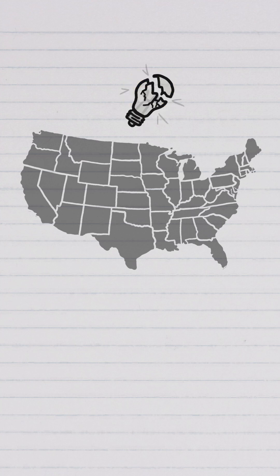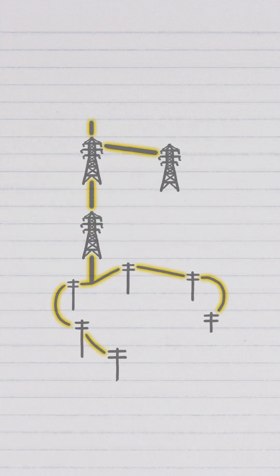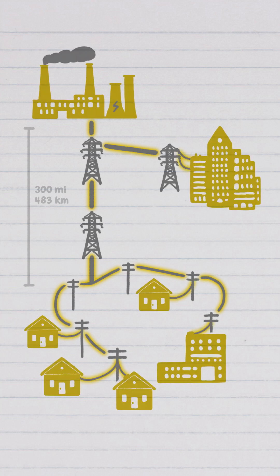There's a big problem with how people get power in the United States. In the US, there are only three separate major electrical grids to supply electricity to homes and businesses, so these grids have to transport electricity over long distances, from power plants to the people who use the electricity.